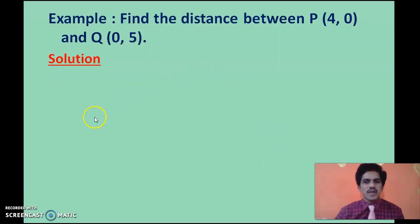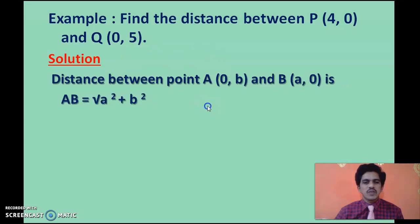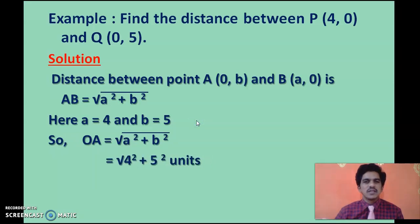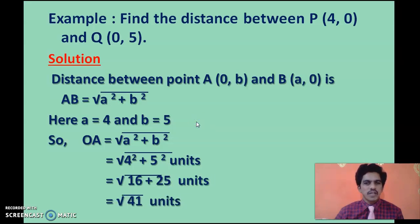Now we will use numerical values. Find the distance between P(4, 0) and Q(0, 5). The x-intercept is 4 and the y-intercept is 5, so the distance is √(4² + 5²) = √(16 + 25) = √41. When you have a point on the x-axis and a point on the y-axis, square the x-intercept and y-intercept, add the two, then take the square root.